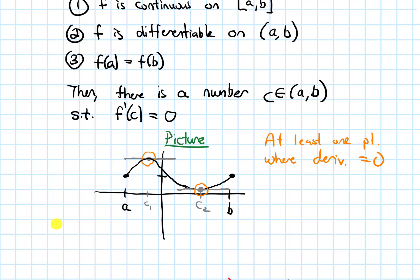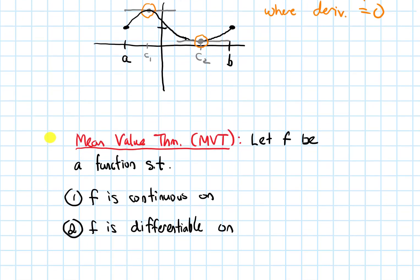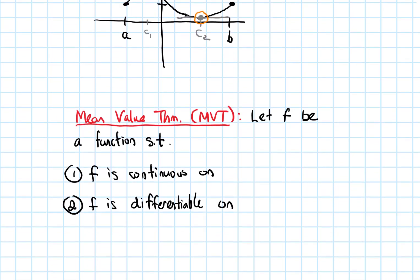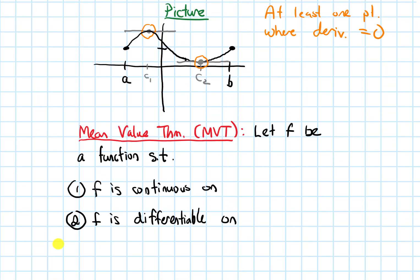We are ready to state the Mean Value Theorem next. The Mean Value Theorem is going to be really similar — it just removes that third condition that says f of a and f of b have to be the same.